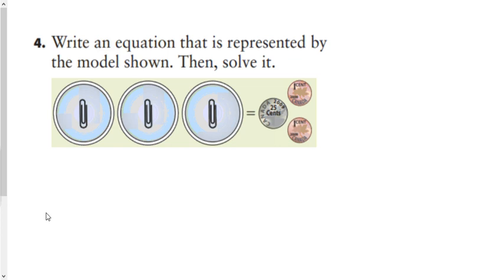It says three paper clips is equal to 27 cents, so we're really asked here what is the value of each of those paper clips if three of the paper clips is equal to 27 cents. So if x is going to represent a paper clip, then three multiplied by the value of the paper clip is going to be equal to 27 cents.